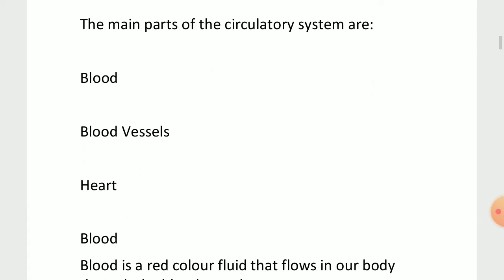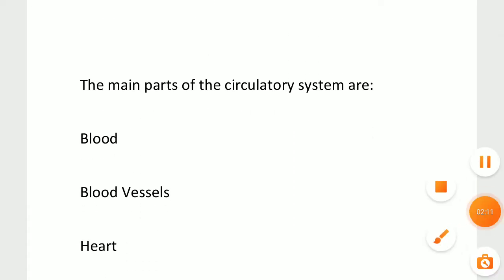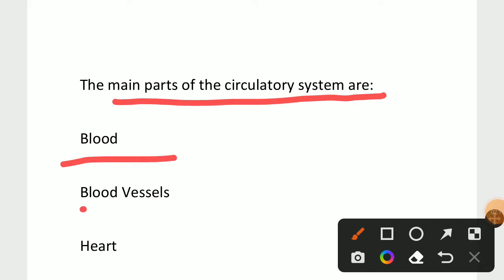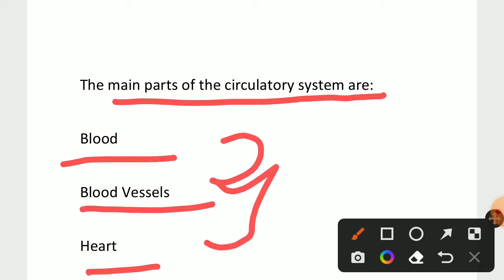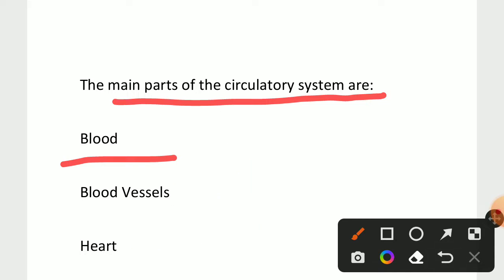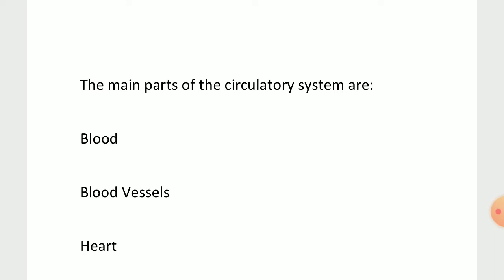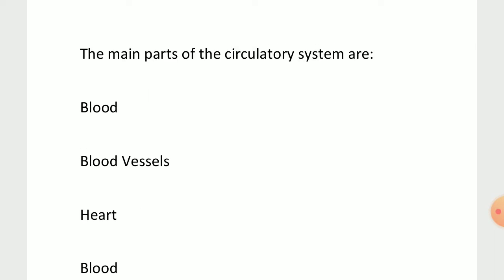Next we are going to see about the main parts of the circulatory system. There are three main parts: blood, blood vessels, and heart. These three we are going to see briefly.